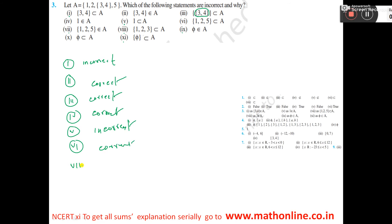Next, number 7: {1, 2, 5} element of A. This is actually a set — {1, 2, 5}. This is not an element of A. So, this is incorrect.